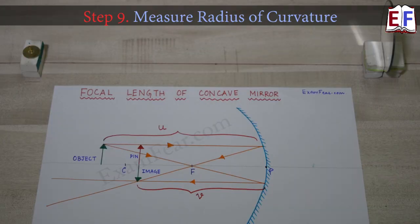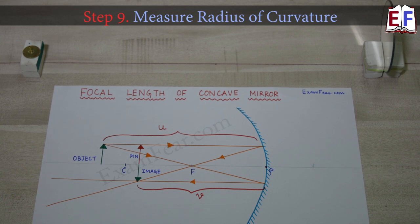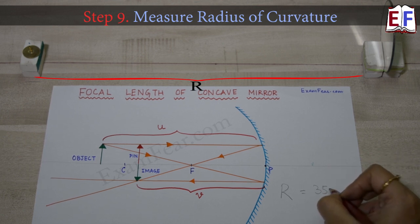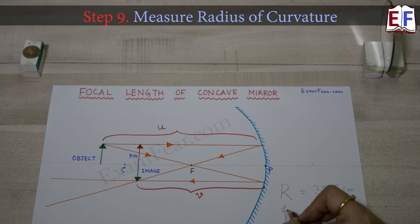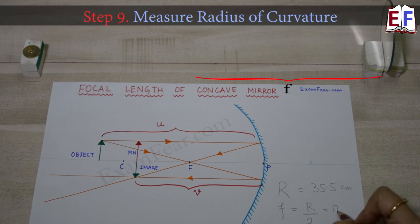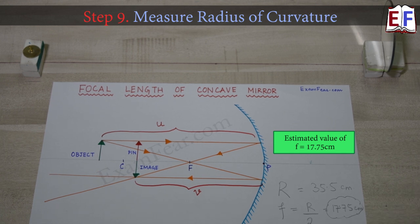Now that we have located the center of curvature, let us measure its distance from the pole. The center of curvature is at a distance of 35.5 centimeters from the pole. This distance is called the radius of curvature, denoted by R. Since focal length is always half the radius of curvature, the estimated focal length is 17.75 centimeters.